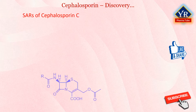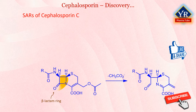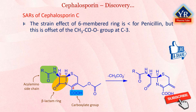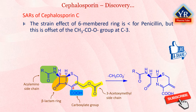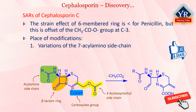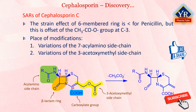Many analogues of cephalosporins have been made, which demonstrated the importance of the beta-lactam ring within the bicyclic system, an ionized carboxylate group at position 4, and the acylamino side chain at position 7. These results tally closely with those obtained for the penicillins. The strain effect of a 6-membered ring fused to a 4-membered ring is less than for penicillin, but this is partially offset by the effect of the acetyloxy group at position 3. This can act as a good leaving group in the inhibition mechanism. The 3-acetoxymethyl substituent is also amenable to modifications. There are variations of the 7-acylamino side chain, variations of the 3-acetoxymethyl side chain, and extra substitution at carbon 7.